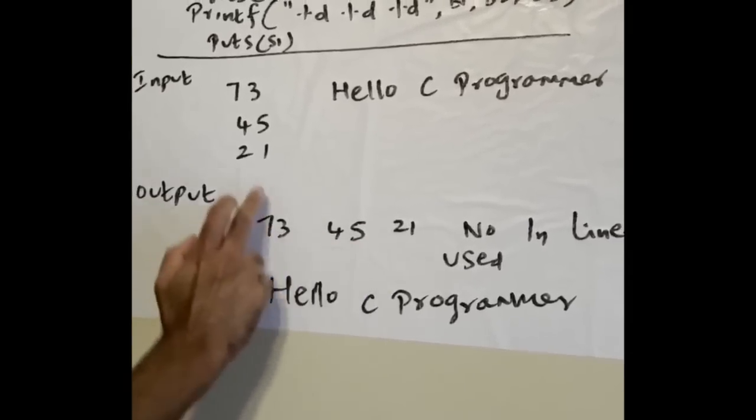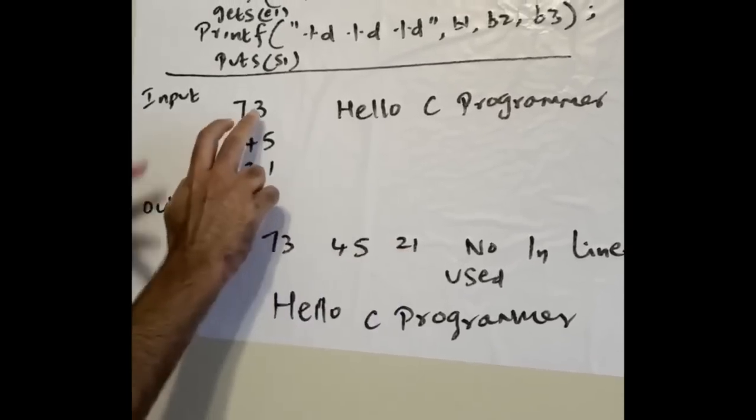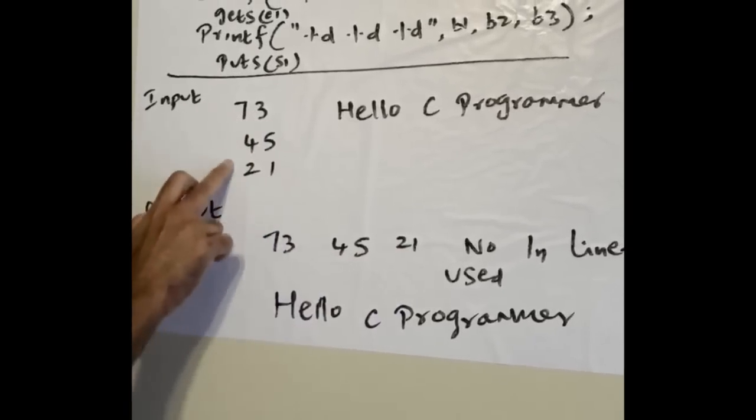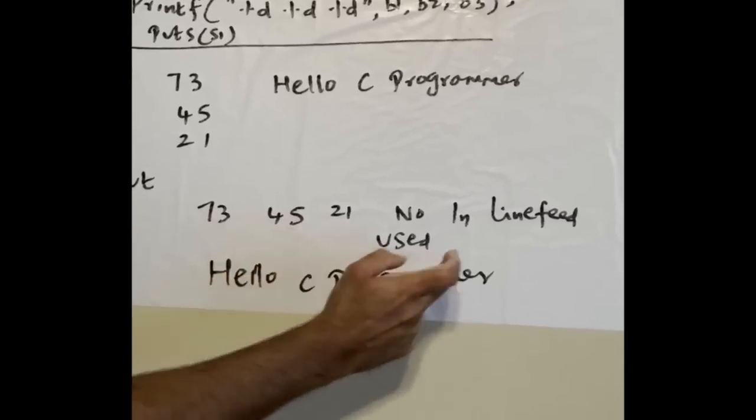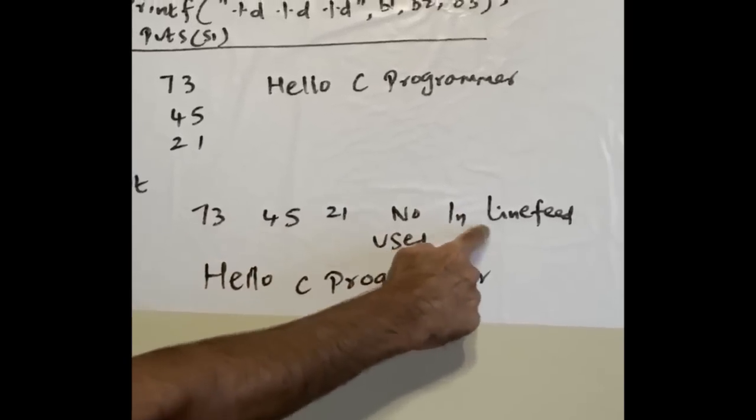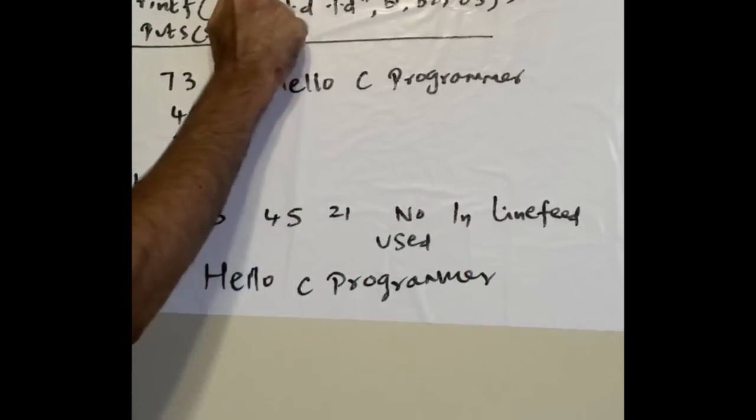Output will be like this: when you execute the program with no errors and run it, output will be displayed. Although you entered in different lines, the three values output will be displayed in one line because there's no \n line feed here.